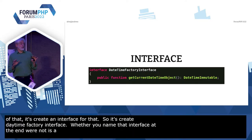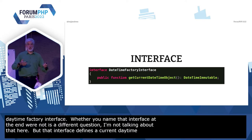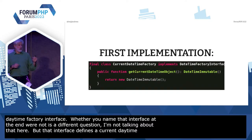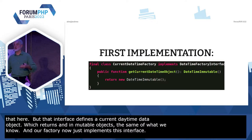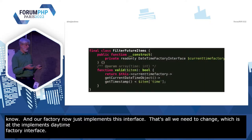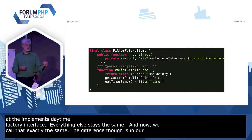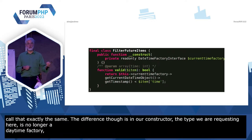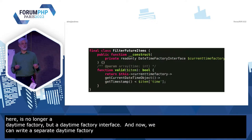That interface defines a method `getCurrentDateTimeObject`, which returns a DateTimeImmutable object. And our factory now just implements this interface — we just add `implements DateTimeFactoryInterface`. Everything else stays the same. In our constructor, the type we are requesting is no longer a `DateTimeFactory`, but a `DateTimeFactoryInterface`. And now we can write a separate DateTimeFactory for actually returning predictable values, implementing the same interface.